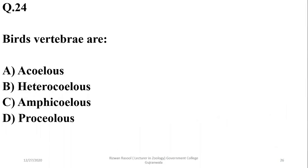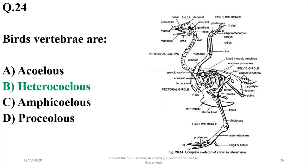Question 23: Birds are classified as having a heterocellous or saddle-shaped vertebrae. Beta is the answer.